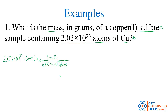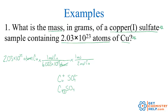Now I can relate copper to copper(I) sulfate. First, let's figure out the formula of copper(I) sulfate. Copper(I) is copper positive; sulfate is SO4 2-negative. Swapping and using the crossover method gives Cu2SO4. There are 2 coppers in every copper(I) sulfate, so I use that as my mole ratio: 2 moles of copper per every 1 mole of copper(I) sulfate, with moles of copper on the bottom.